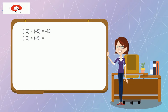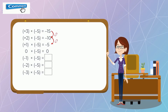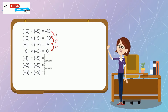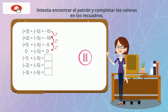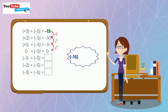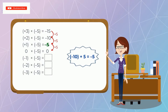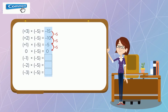Veamos otro caso. Lo primero que haremos es descubrir el patrón en el producto de las multiplicaciones realizadas y, con base en ello, completar los recuadros. Pausa el video e intenta encontrar el patrón y completar los valores de los recuadros. El patrón es 5: si a menos 15 le sumo 5 obtengo menos 10; si a menos 10 le sumo 5 obtengo menos 5; y si a menos 5 le sumo 5 obtengo 0. Así, a medida que el multiplicando disminuye en 1, el producto aumenta en 5.